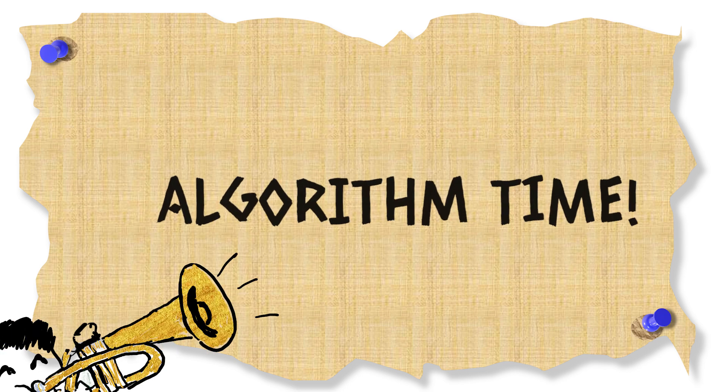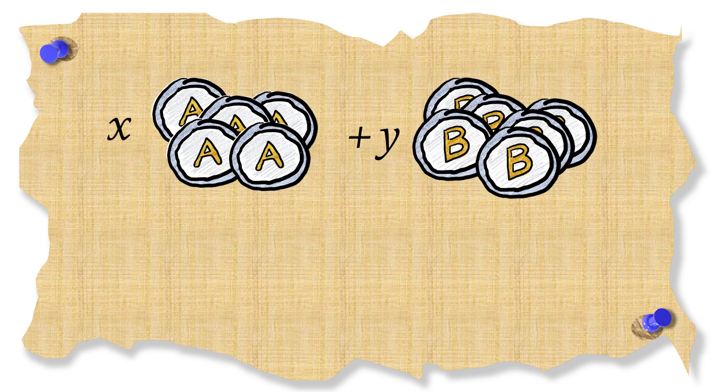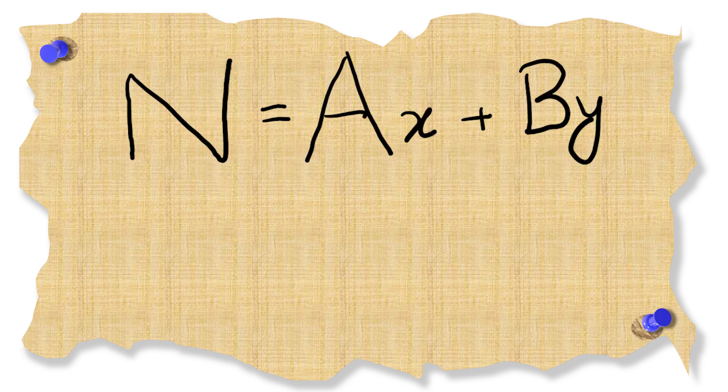It's time for the algorithm now. What we want is to use x many coins of denomination A and y many coins of denomination B to make some number N. We can write this as N equals AX plus BY.